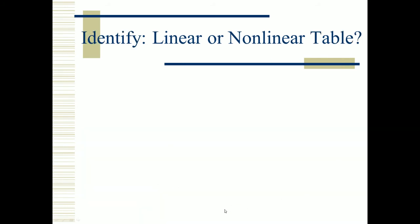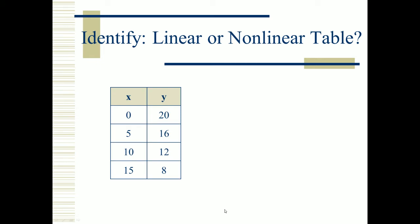Now I'd like you to try identifying whether each table is linear or nonlinear. The first one is linear because X adds by 5 each time and Y is changing by subtracting 4 constantly.